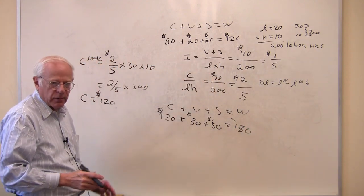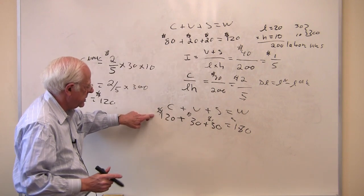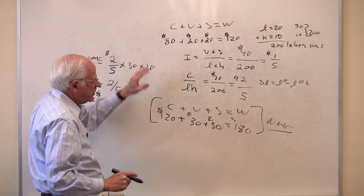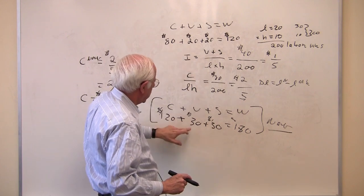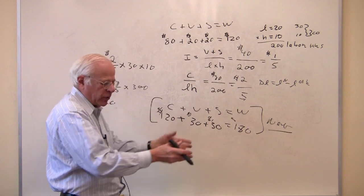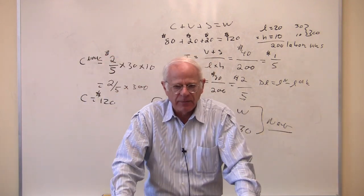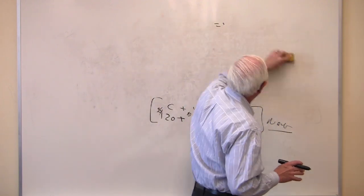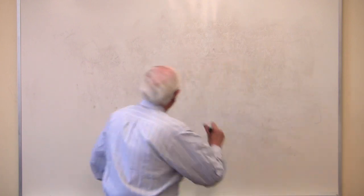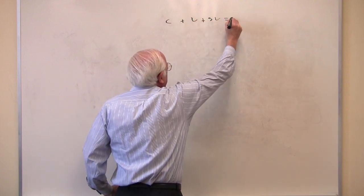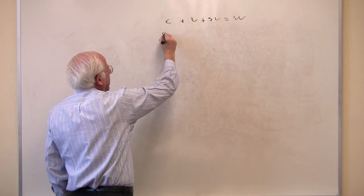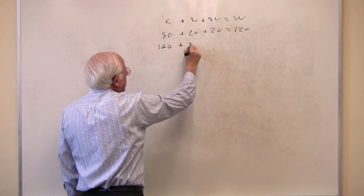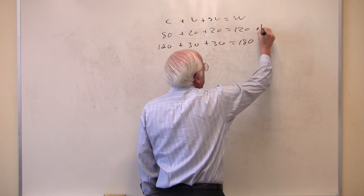So this has grown from this to this. This is the new equation. This is the old equation. Notice the surplus has grown from 20 to 30. Value of labor power grows from 20 to 30. The value of the means of production grows from 80 to 120. We're employing more productive labor. Now let's, in the last few minutes, let's examine this a bit more carefully to see what Marx has produced here. Let me see. 80 plus 20 plus 20 is 120. What did I have here? 120 plus 30 plus 30, 50 is 180. This is the old. This is the new.